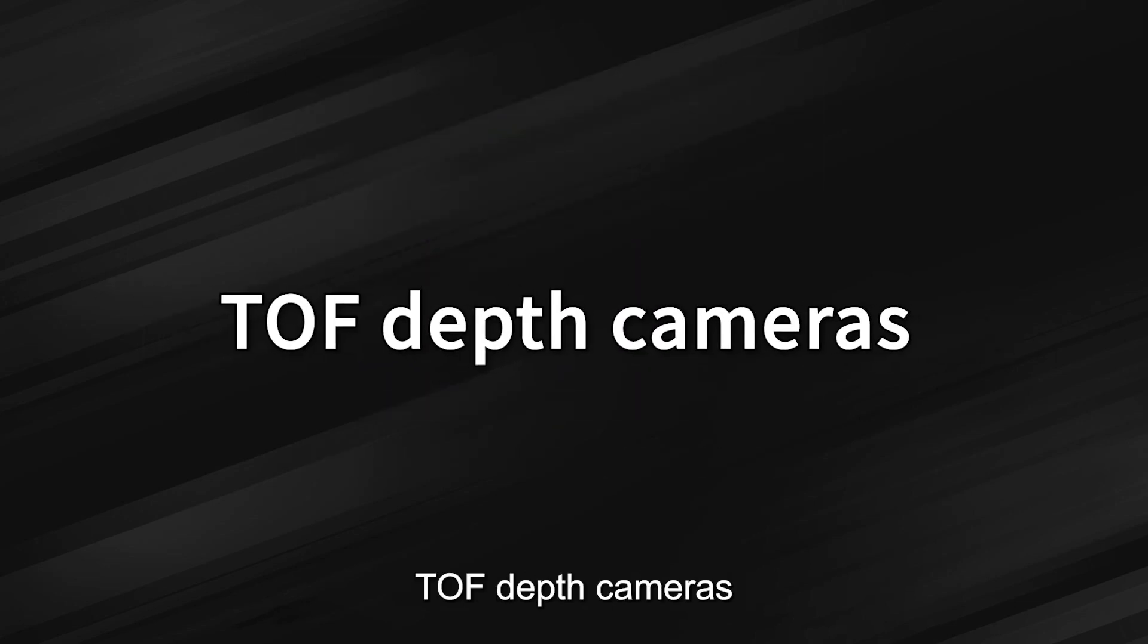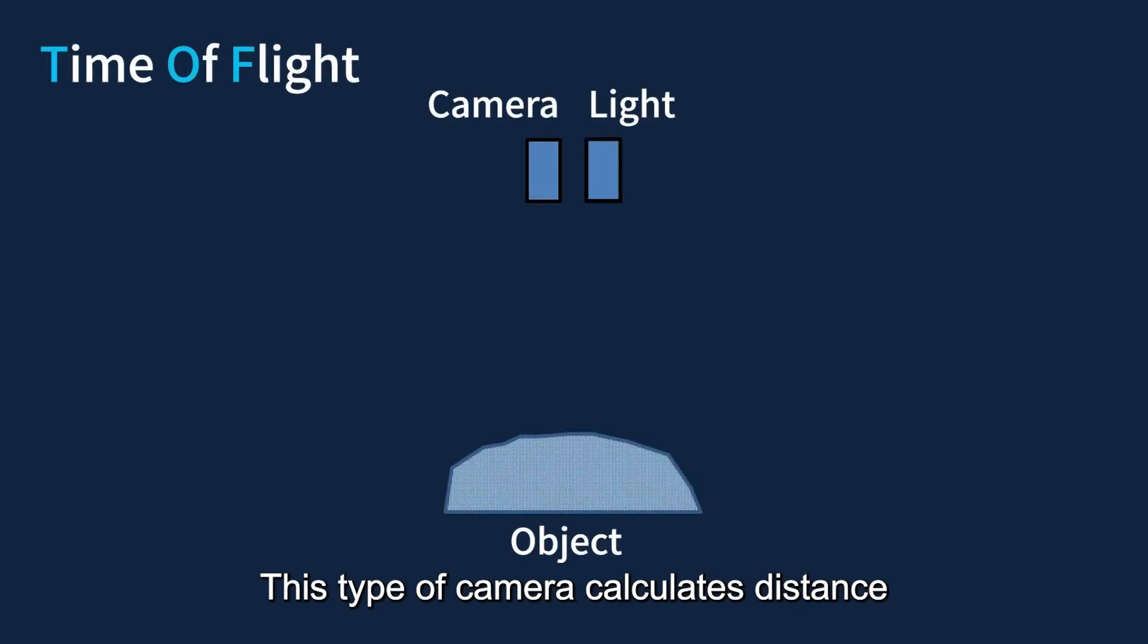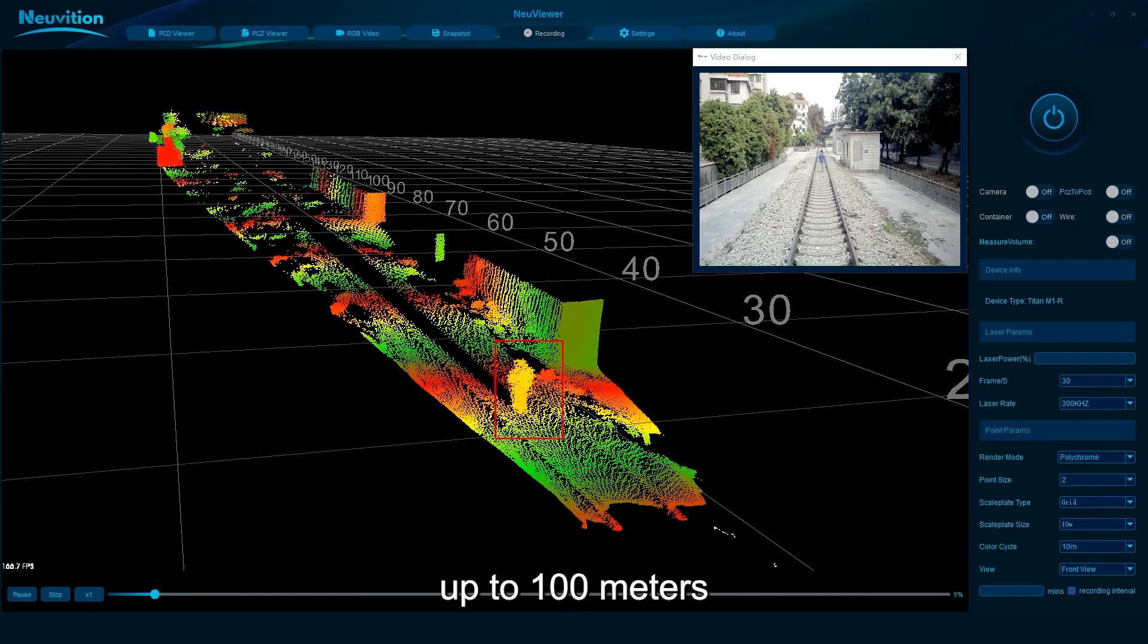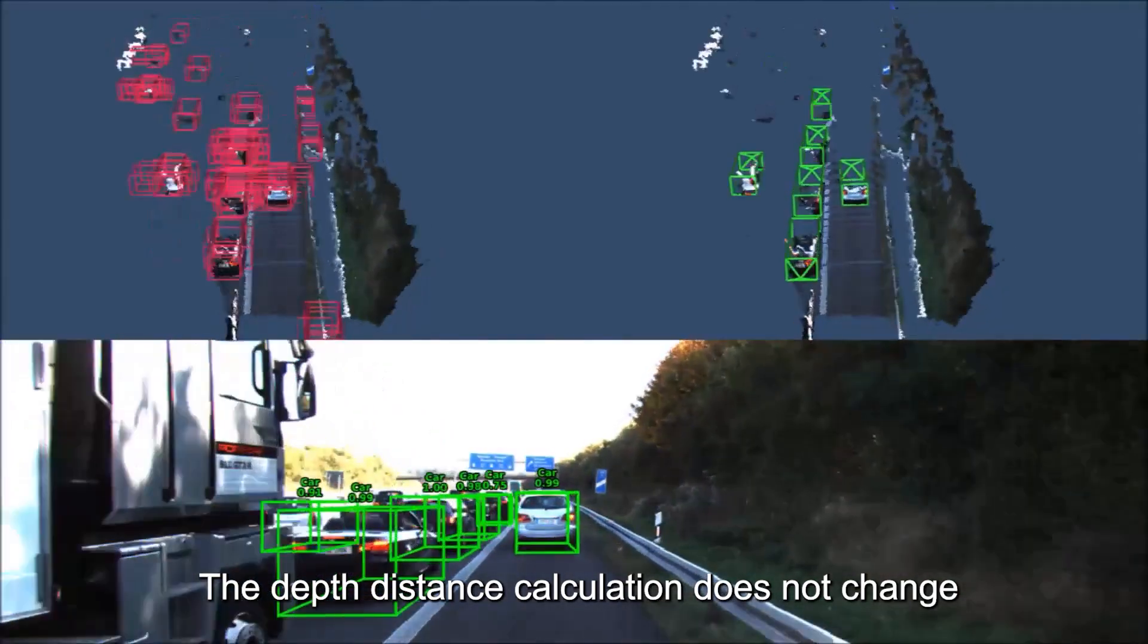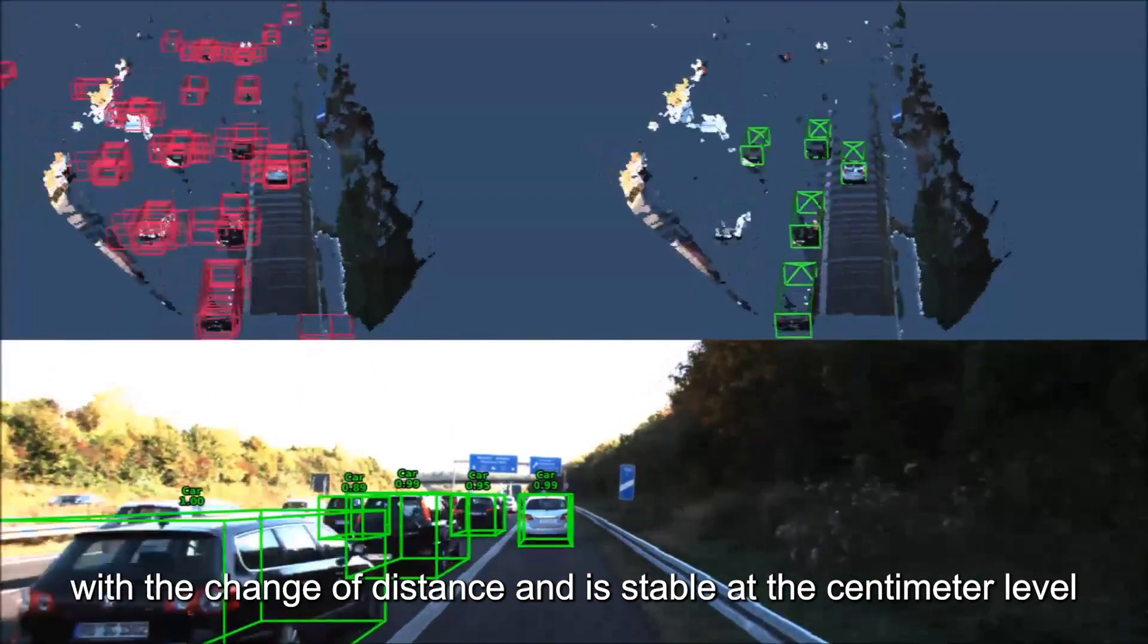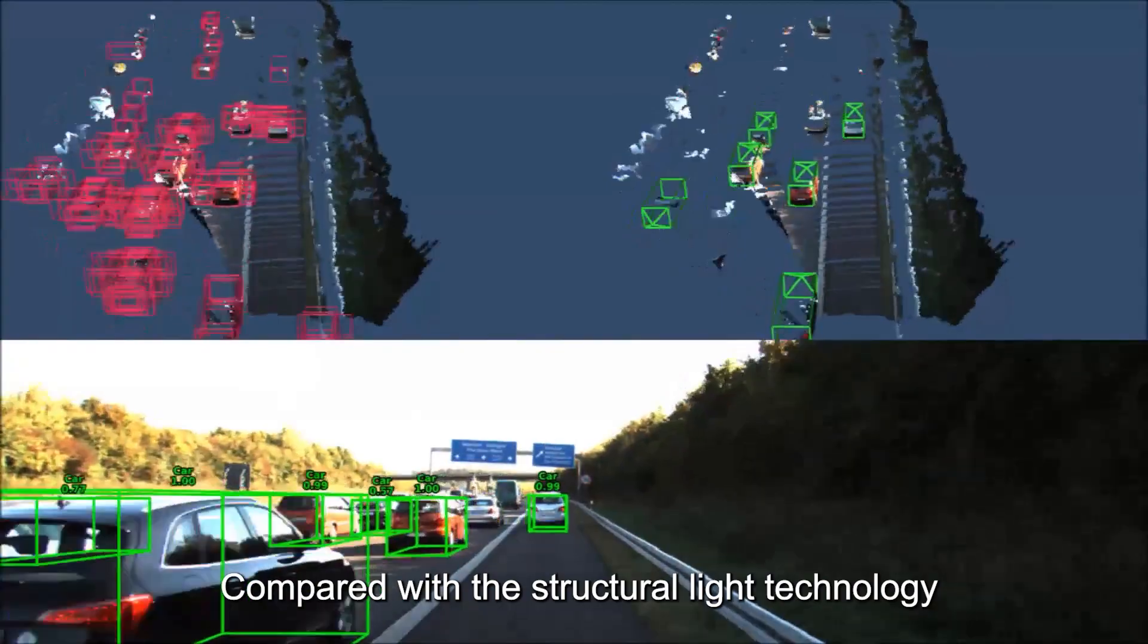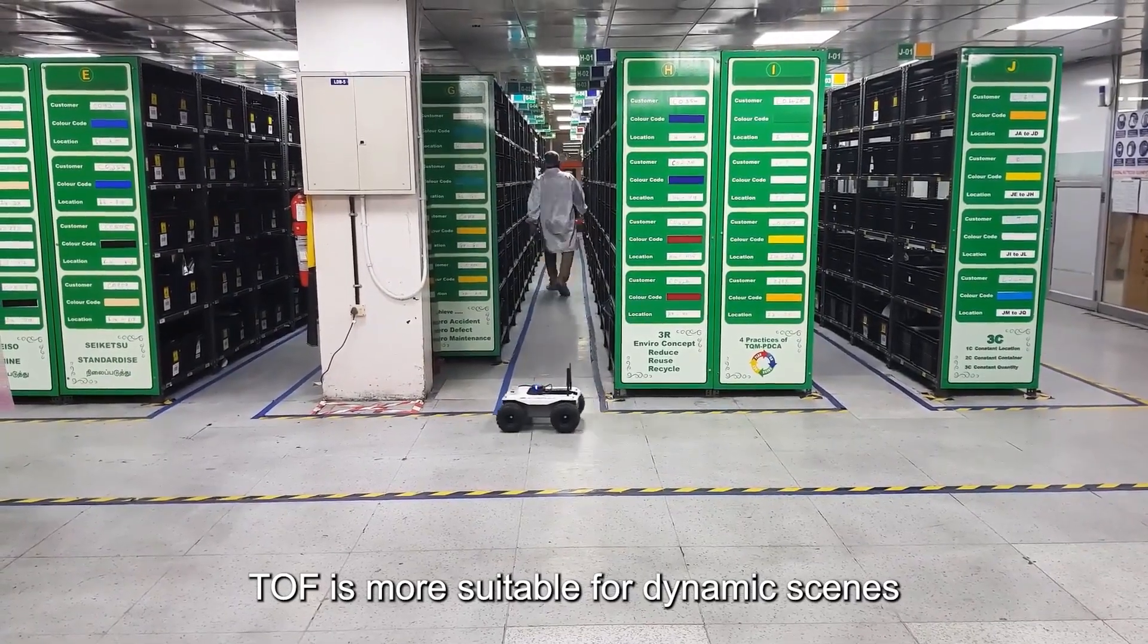ToF depth cameras. This type of camera calculates distance by emitting continuous pulses of light, reflecting them off a target and recording the time of flight of the returned light. The measurement range is far away, up to 100 meters. The depth-distance calculation does not change with the change of distance and is stable at the centimeter level, compared with the structural light technology.